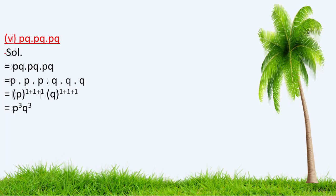For the fifth part of Question 3, in the solution we again first arrange the similar terms: p · p · p · p · q · q · q. The exponent of p is 1, so we write p only once and add up the exponents of p. Similarly for q. After solving, we find the resulting exponential expression.